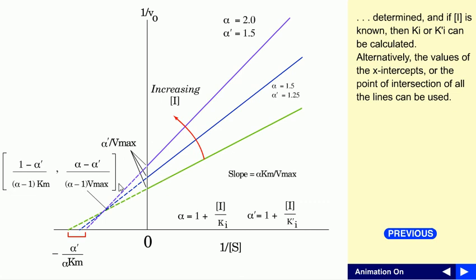The most important feature to focus on is the intersection point, where all lines meet in the upper left quadrant. This point has coordinates: X equals negative α'/(α − 1)·Km and Y equals (α − α')/(α − 1)·Vmax. These values are important and can be used to determine Ki and K'i.